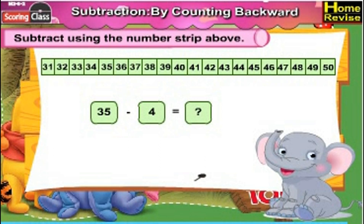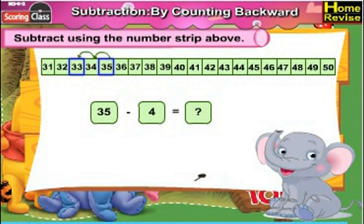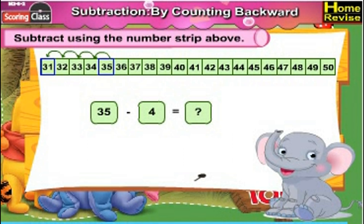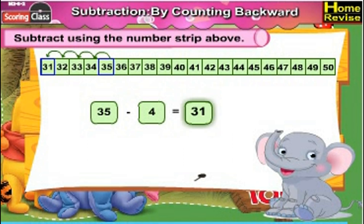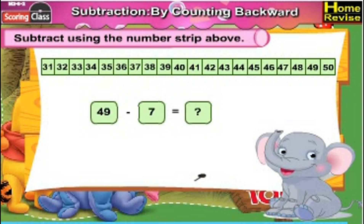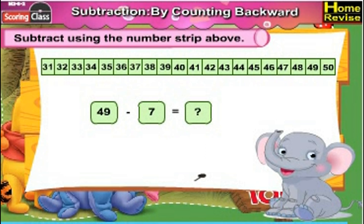35 minus 4: subtracting 4 from 35 means going four places back. If you do that, you reach 31. So 35 minus 4 is 31.